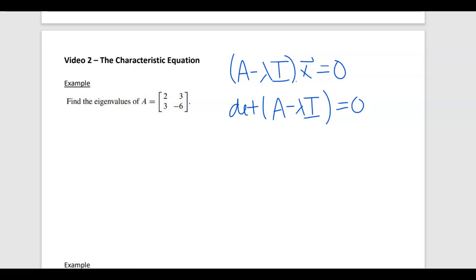So I'm going to find first A minus lambda I by taking my diagonal and doing minus lambda on the diagonal. Now, I want to try to figure out where the determinant of this is 0. So I have 2 minus lambda times negative 6 minus lambda, and then minus 3 times 3 is 9.